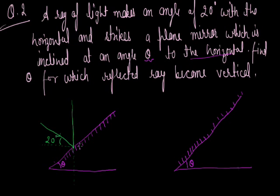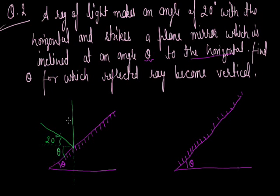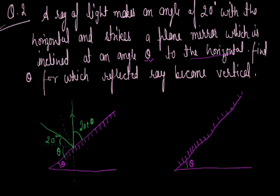Extend the incident ray line. If the mirror makes angle theta with the horizontal, then by alternate angles, that angle is also theta. The angle between the incident ray and the mirror surface is therefore 20 plus theta. By the law of reflection, if we draw the normal, angle i equals angle r, so the angle between the reflected ray and the mirror surface is also 20 plus theta.